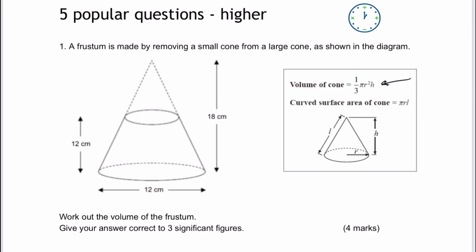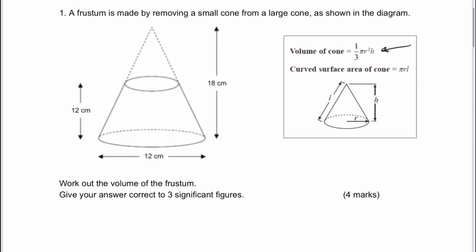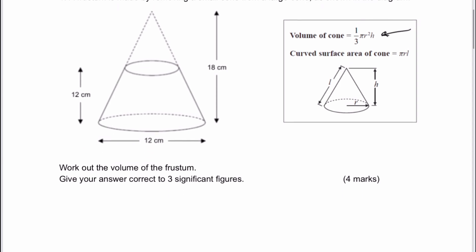The first thing is that we've got two cones. We have a small cone with a height of 6 centimeters and a much larger cone with a height of 18 centimeters. What we've done is taken one away from the other.